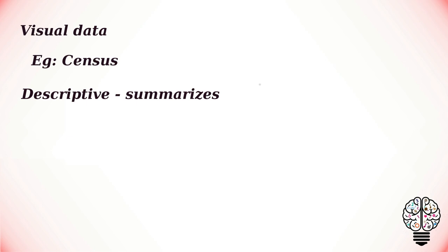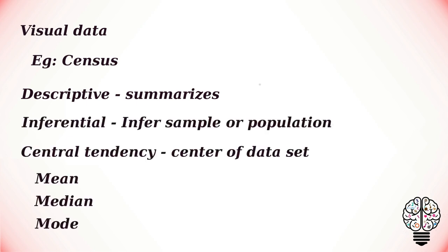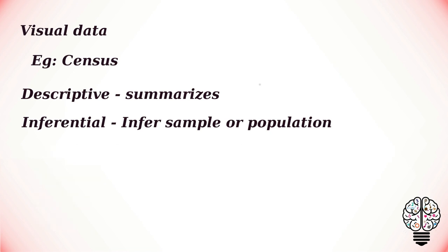Descriptive statistics include the measures of central tendency and the measure of variability. Central tendency involves different kinds of averages: the mean, median, and mode. By using what is known as inferential statistics, researchers can infer things about a given sample or population.